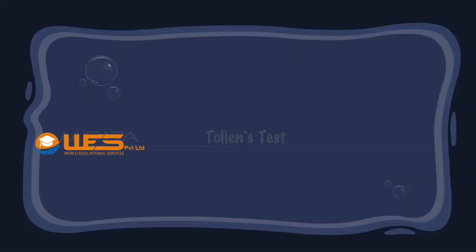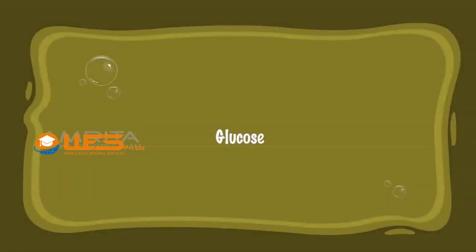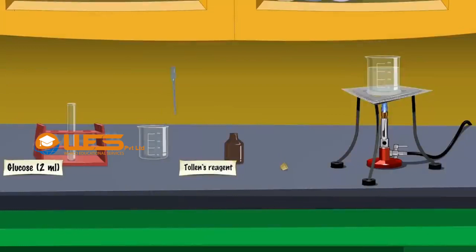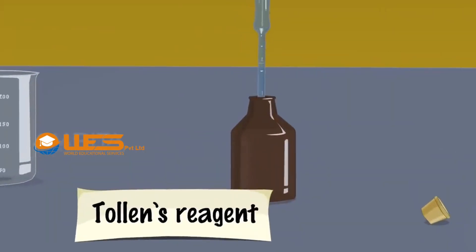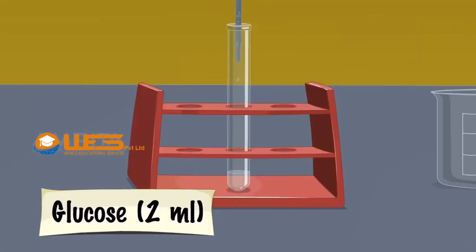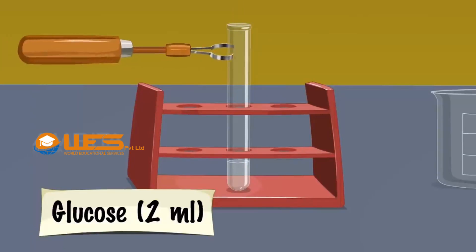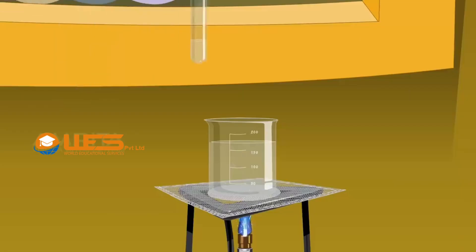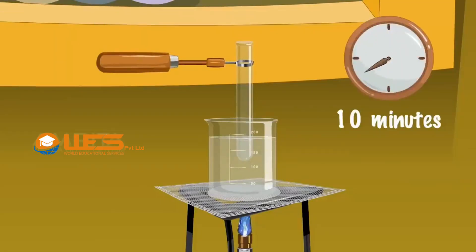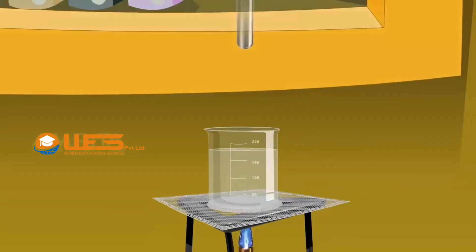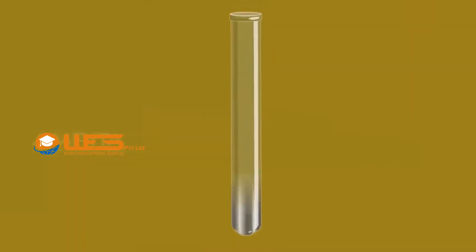Tollens Test. Glucose. Take 2 ml of Tollens reagent using a dropper. Add it to a test tube containing 2 ml aqueous solution of glucose. Remove the test tube from the rack using a test tube holder. Place it in a boiling water bath and heat for 10 minutes. Glucose is a reducing sugar that reduces silver ions in the test reagent to elemental silver, which is accumulated on the inner surface of the reaction vessel, producing a silver mirror on the inner surface of the vessel.